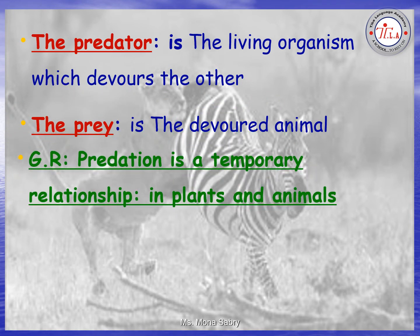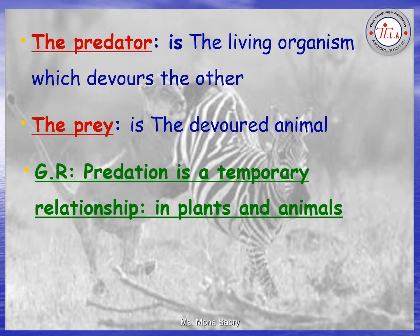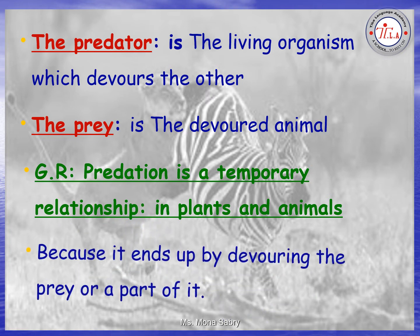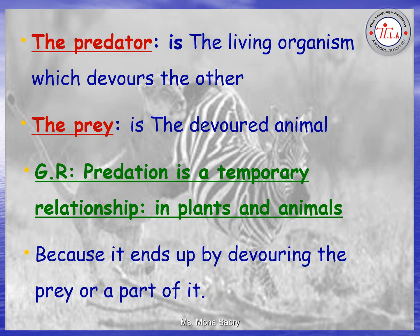Give reason: Predation is a temporary relationship in plants and animals, because it ends by devouring — by eating the prey or a part of it.